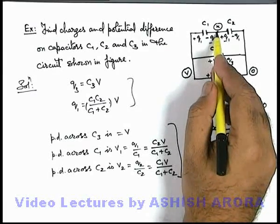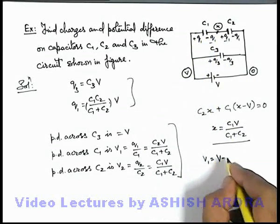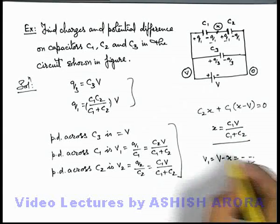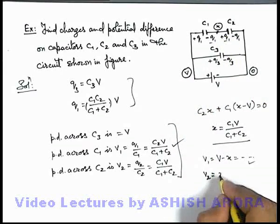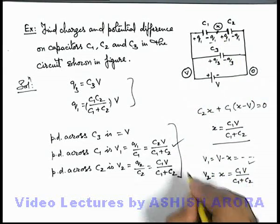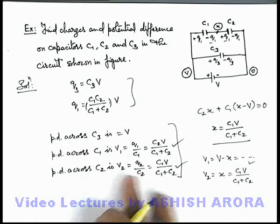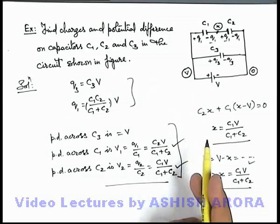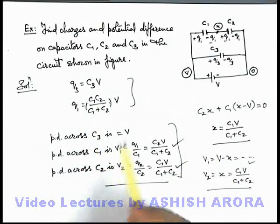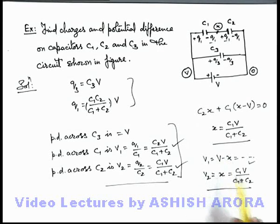If we calculate the potential difference across C1, it is V - x, so V1 = V - x. Substituting the value of x gives the same result as before. The potential difference across C2 is x - 0 = x = C1·V / (C1 + C2), which is also the same result. So in either way you can handle capacitive circuits: either use Q = C·V for individual or grouped capacitors, or apply nodal analysis to find node potentials and calculate all charges and potential differences.